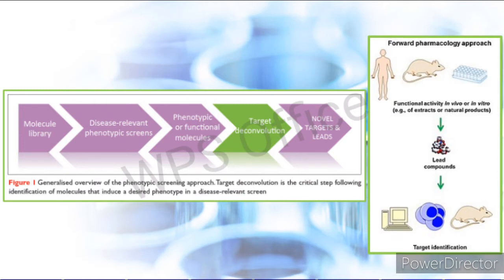From there, the researcher will be able to derive the optimized lead compound and a specified target. In this sense, phenotypic screening is also called forward or classical pharmacology, since the researchers first establish the effect of a compound and then its target. Hence, with phenotypic screening, first-in-class drugs are usually obtained, but it does not guarantee that these first-in-class compounds are the best among other compounds under the same class.